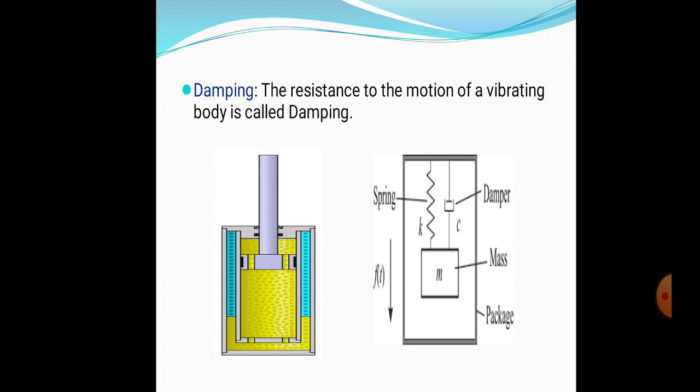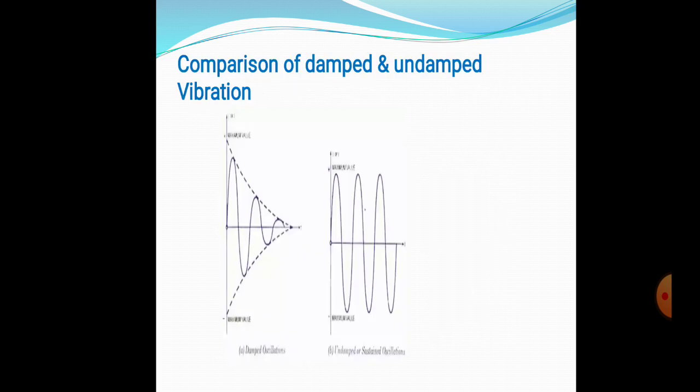Now the comparison of damped and undamped vibrations. Look at this: first is damped conditions, second is undamped situations. With damped oscillations, the amplitude goes on decreasing—at the start it is high and it goes comparatively low.